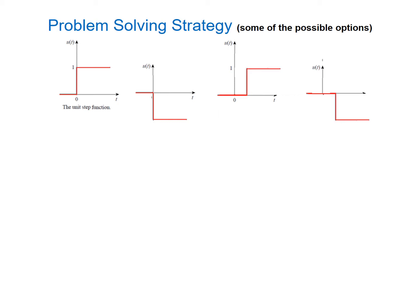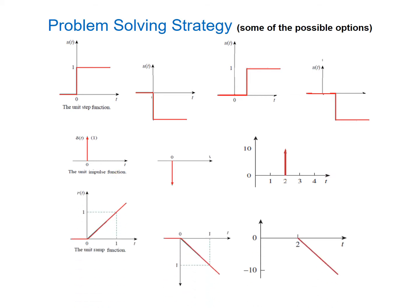We can use the unit step function u(t), or its inverse u(-t), or shifted versions of these. If you reverse it, it will be u(-t). So only singularity functions: the unit step function, the delta or impulse function, and the ramp function — original r(t), inverted, or shifted. Only these types of functions we can use to break a function into its components.